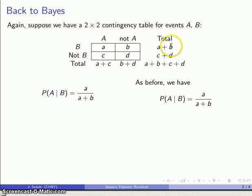So we know that B has occurred, we're in this A plus B set, and then A has occurred A of those times, and our frequentist interpretation tells us that this is the conditional probability.